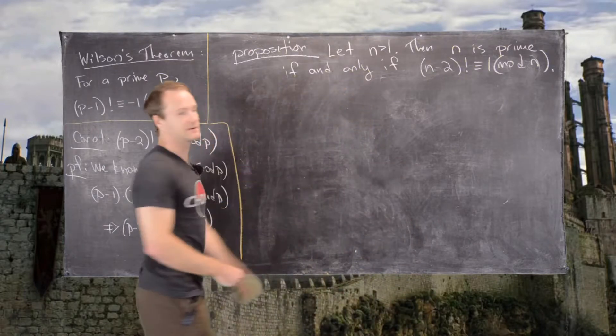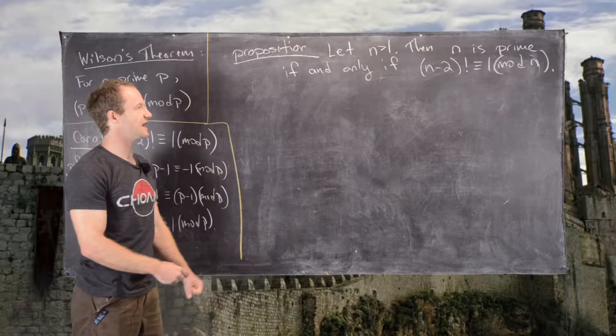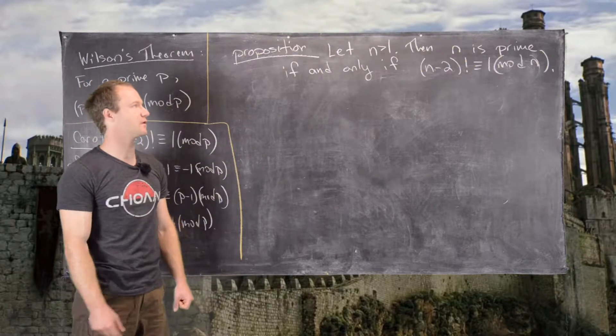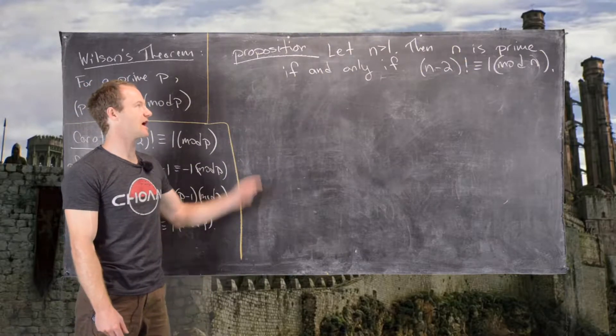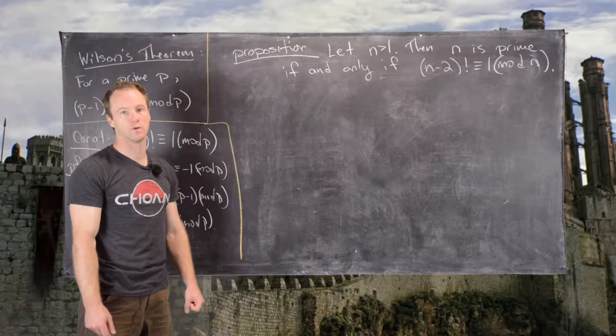In this video we're going to look at the following proposition which follows from Wilson's Theorem. We want to show that if n is a natural number bigger than 1, then n is prime if and only if (n-2)! is congruent to 1 mod n.